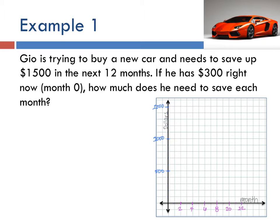So in this first example, Gio is trying to buy a new car and he needs to save up exactly fifteen hundred dollars in the next twelve months. Let me write that point down. In month twelve we want fifteen hundred dollars.